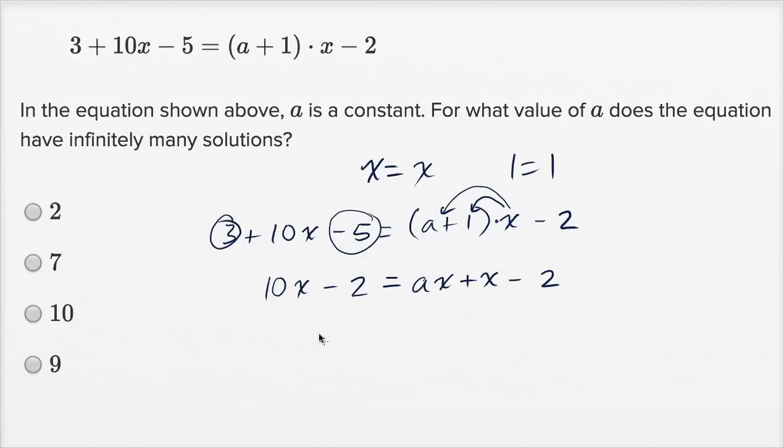I can get rid of both of these negative twos if I add two to both sides. Remember, anything I do to one side, I've got to do to the other one. So adding two to both sides, I'm left with 10x = ax + x. Let's subtract x from both sides. On the left hand side, I'm going to get 9x. On the right hand side, I'm going to get ax.